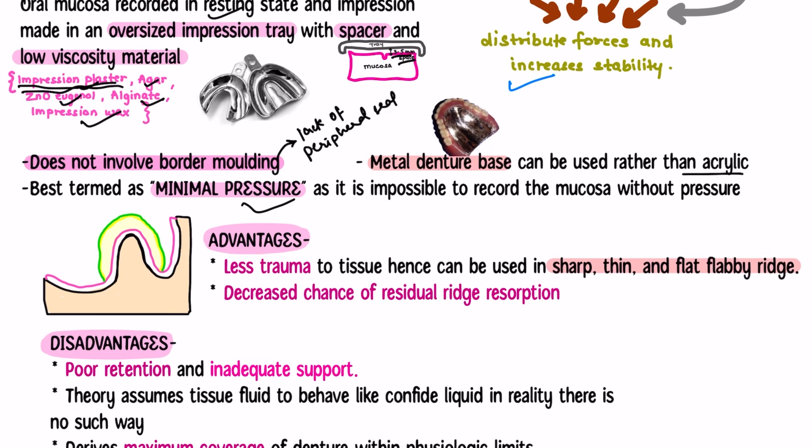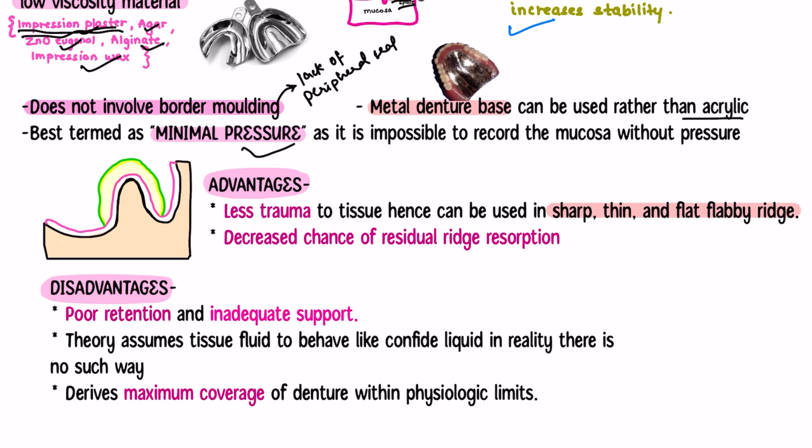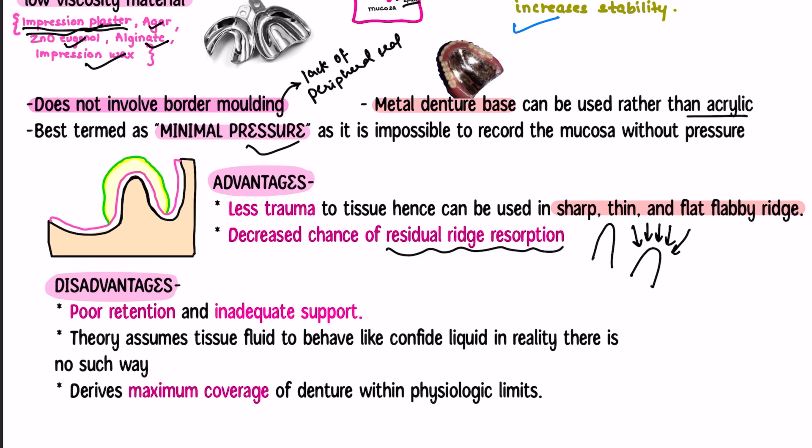Since border molding is not involved, there will be a lack of peripheral seal. Metal-based dentures can be used rather than acrylic denture bases in this theory. This theory is best termed as minimal pressure theory, as it is impossible to record the mucosa without any pressure. The advantages are: it causes less trauma to the tissue since minimal pressure is applied, so it can be used in cases where the ridge is sharp, thin, or flat and flabby. There is also a decreased chance of residual ridge resorption, as minimal pressure means less ridge resorption.